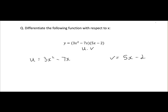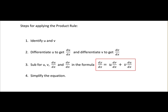Next we differentiate these to get du dx and dv dx. If we differentiate u, we get du dx, so 3x squared differentiates to 6x, minus 7x gives us minus 7. Differentiate dv dx, 5x differentiates to 5, and minus 2, the constant, differentiates to 0. So that's the first two steps completed.